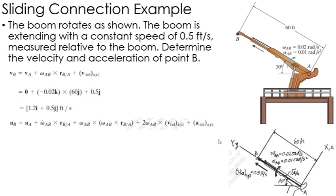Now I can do the same thing with the acceleration of A. Where again, I'm sorry, the acceleration of B. The acceleration of A is 0. It's stationary right here. Alpha is negative 0.01 cross R, which is 60 in the J direction.